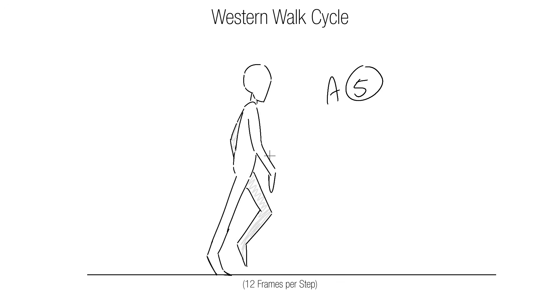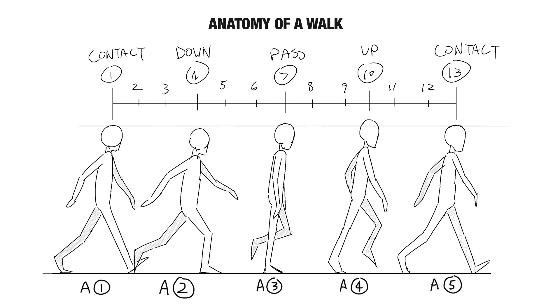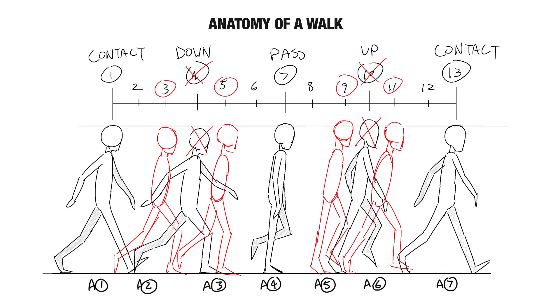For the western walk cycle, we have to make some changes. We want to keep our 12 frame walk as it is the standard timing for walks. However, since animation is done on 2's in the west, we need drawings on frames 1, 3, 5, 7, 9, 11, and etc. Obviously, with 3D animations done on 1's, they don't run into this issue. But for us, this means we need to throw out the down and up position and split each of those drawings into two separate drawings.